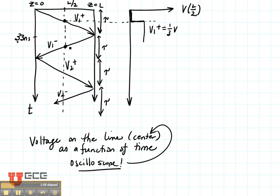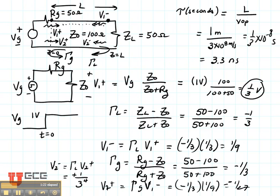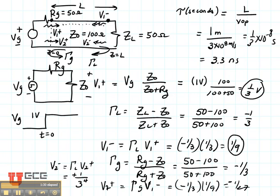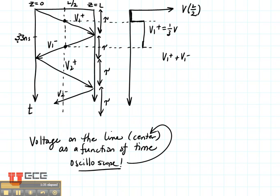So my voltage is going to step up to V1 plus which is equal to one third volt. And it's going to stay exactly that same way until V1 minus comes. At that point the voltage is going to change to V1 plus plus V1 minus. Let's go back and see what V1 minus was. V1 minus is one ninth. Is that right? I think I've got a minus sign here. I think it's supposed to be minus one ninth. So V1 minus is minus one ninth which means I'm going to step down just a little bit. This is going to be one third minus one ninth. That's the magnitude that I'll see right here. And it's going to stay that way